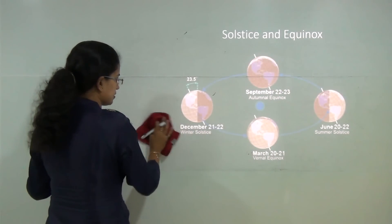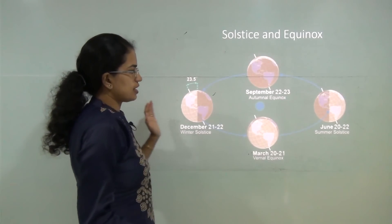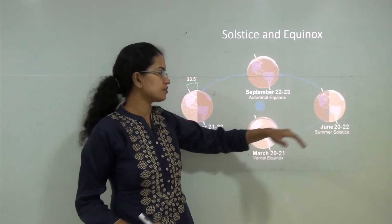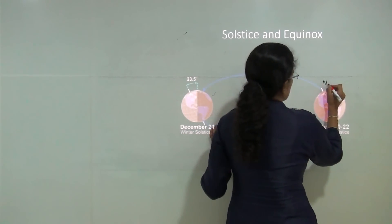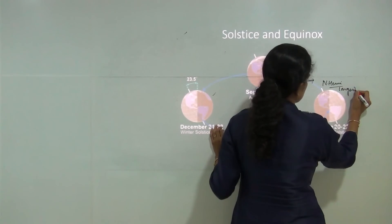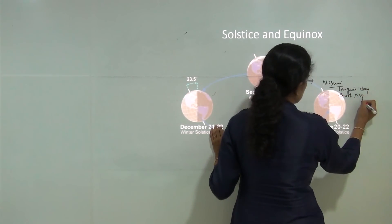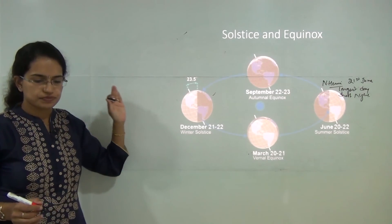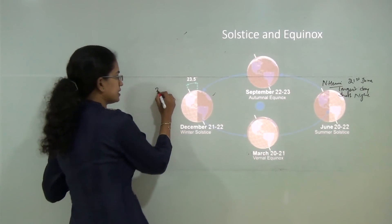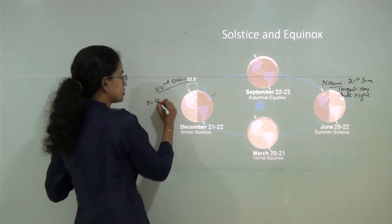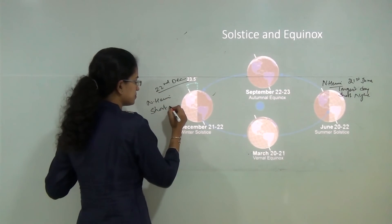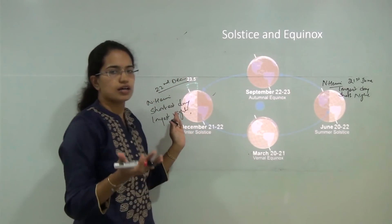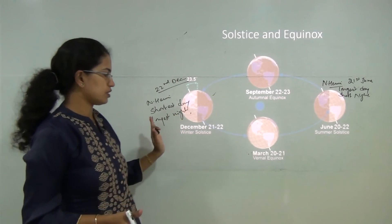Solstices can be divided into summer solstice and winter solstice. The summer solstice falls on 21st June. In the northern hemisphere, the longest day and shortest night occur on 21st June. The winter solstice falls on 22nd December, when the northern hemisphere experiences its shortest day and longest night. The reverse happens in the southern hemisphere for both solstices.